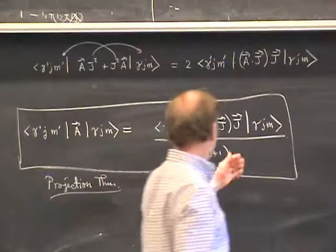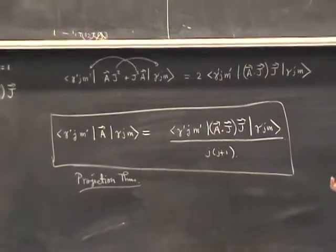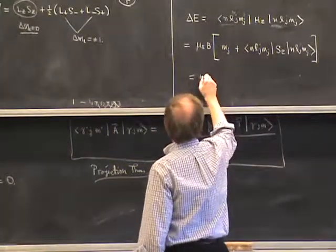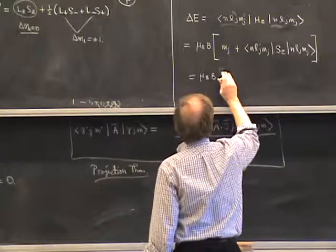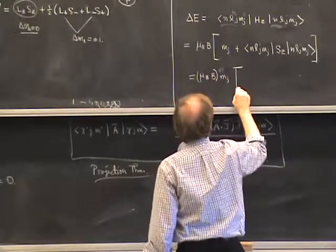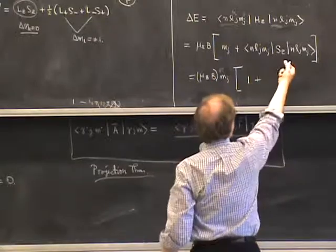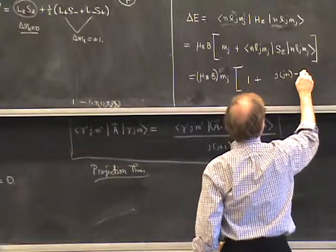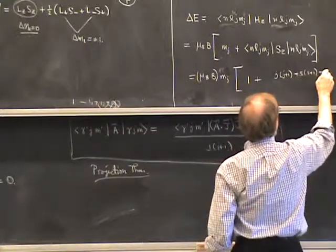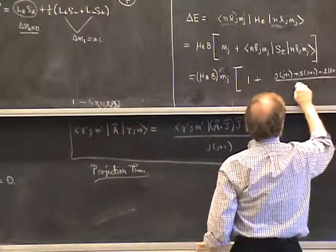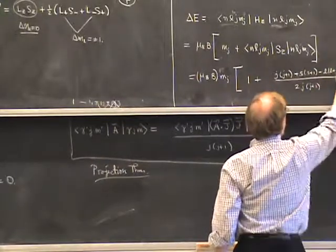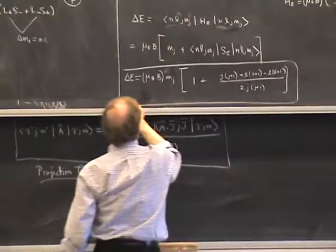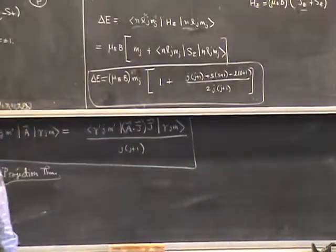Applying the projection theorem, the weak-field Zeeman energy shift comes out as ΔE = μ_B B m_j × g_J, where the Landé g-factor is g_J = 1 + [j(j+1) − l(l+1) + s(s+1)] / [2j(j+1)]. The quantity in the square brackets is the Landé g-factor, which gives the proportionality between the magnetic moment and the angular momentum in a given irreducible subspace.